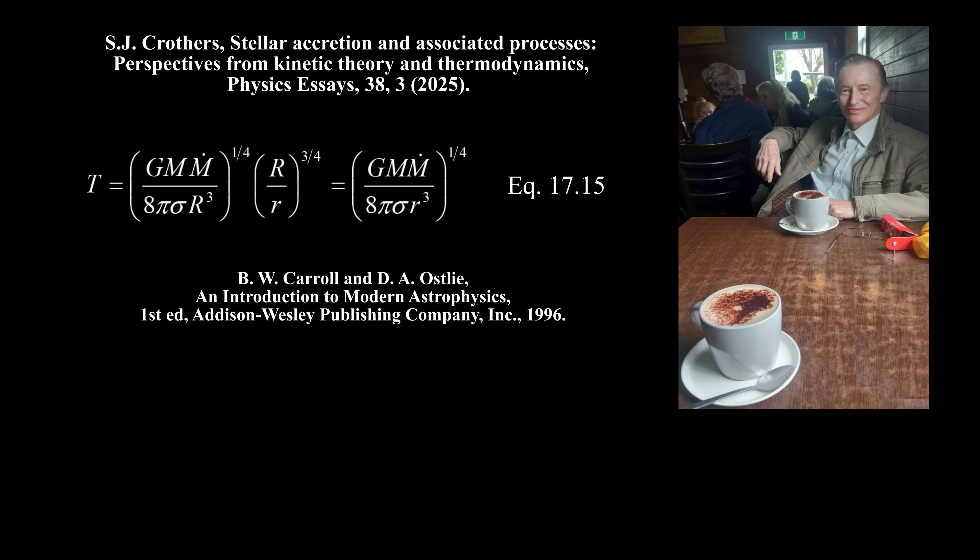At their equation 17.15, Carroll and Ostlie give the temperature of an accretion disk as a function of the radius of the annulus by this equation. Once again, the left side is intensive, but the right side is not, so the equation is false.